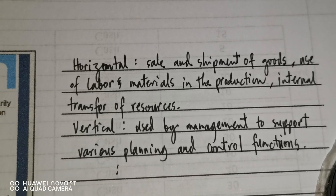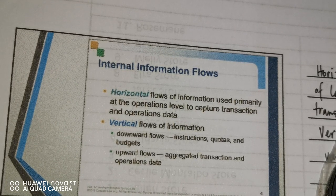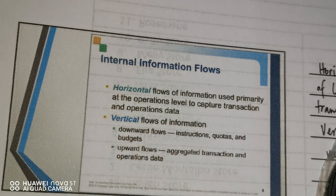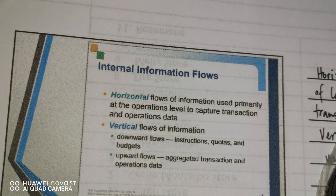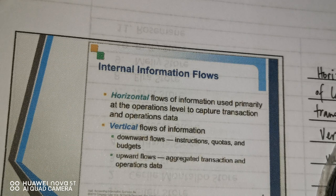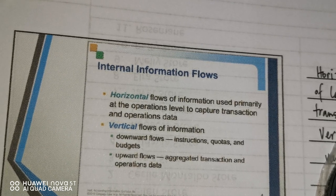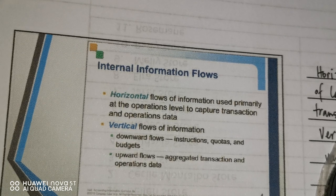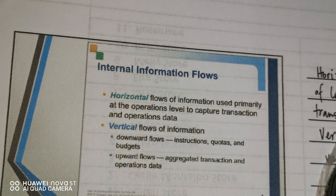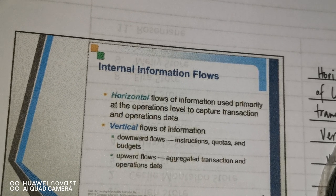For vertical flow, in the pyramid there are downward and upward arrows. The downward flow means information comes from top management down to operations personnel. The information flowing downward consists of instructions, quotas, and budgets. Policies and procedures are formulated starting from top management, with specific policies made by middle and operations management, then passed down to operations personnel who follow them in their day-to-day activities.